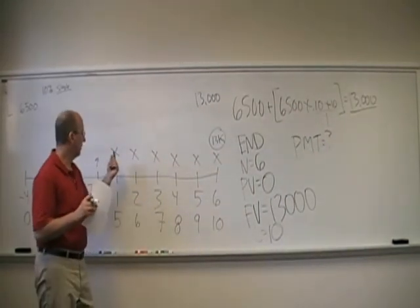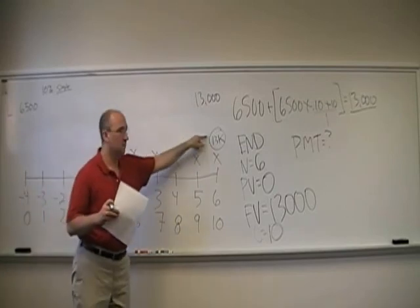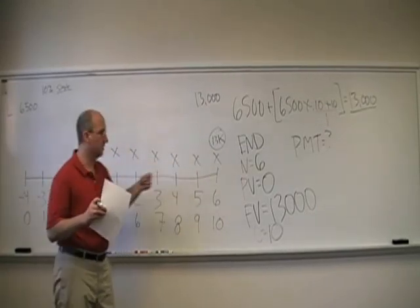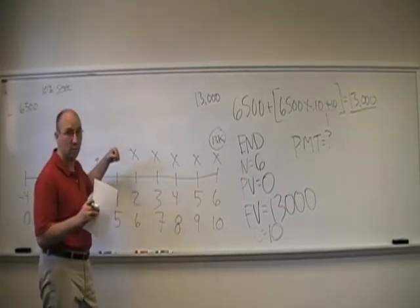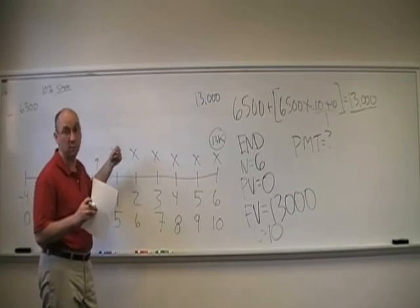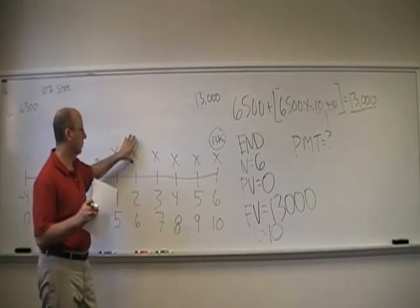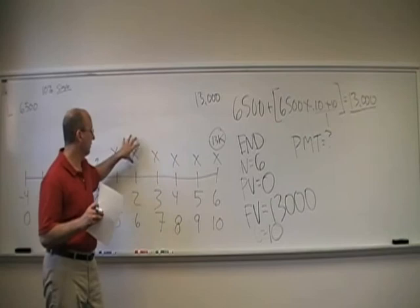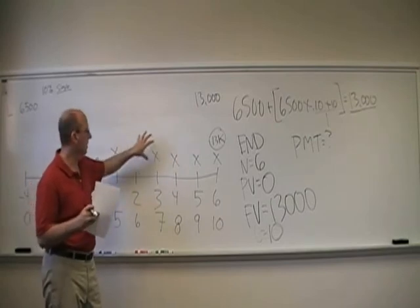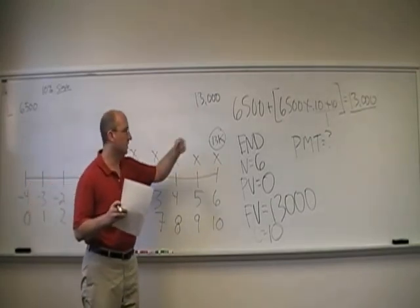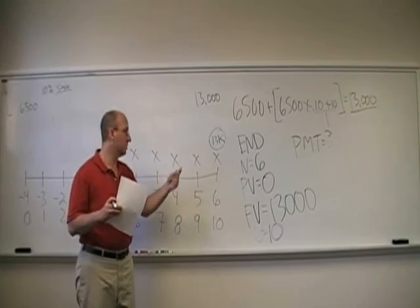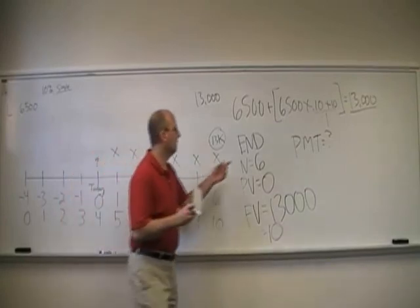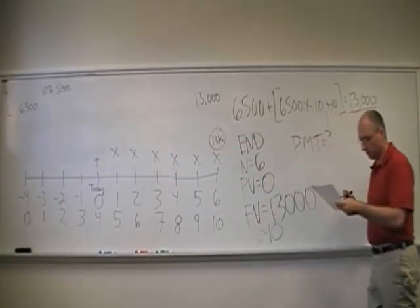Such that the future value of this payment gets a chance to grow for five periods at 10% compound, 1 plus 10%, 1.1 to the fifth, plus 1.1 to the fourth times the second payment, third, fourth, and then as soon as we put this last payment in, it's $13,000. If you go ahead and solve for this in your calculator...